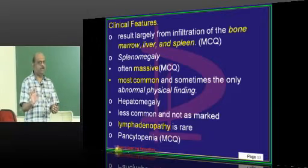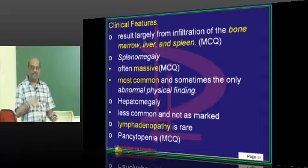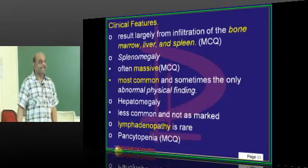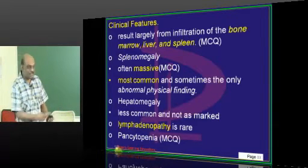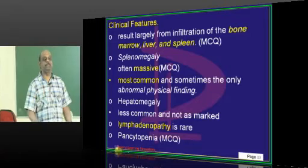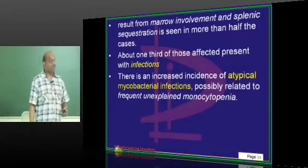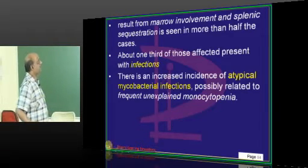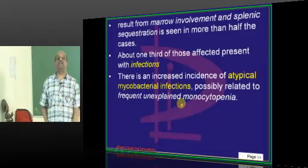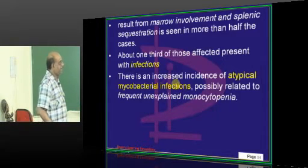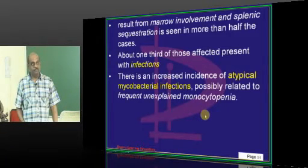The patient doesn't want that painful bone marrow biopsy. You try aspiration and nothing is coming out — even dancing Gangnam style, nothing is coming. Dry tap is hairy cell leukemia — what you need to remember. Around one third of patients will develop infections, especially atypical mycobacterial infections, which are very common in hairy cell leukemia patients because they will have unexplained monocytopenias classically.